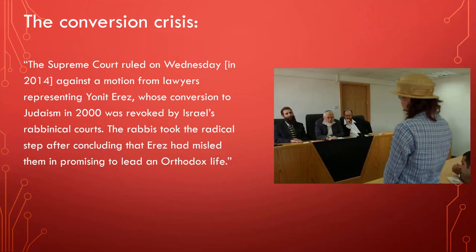A modern example of this is the conversion crisis, where the Supreme Court in Israel notes cases like Yonit Eretz, who converted 14 years before the article was written, but wasn't being orthodox enough, so the court nullified her conversion. There was also a woman in New York who, a few years after she converted, was caught wearing pants and the rabbi nullified the conversion right there. This became the practice, even though you're really not supposed to nullify conversions. Halakha doesn't allow you to nullify a conversion retroactively.